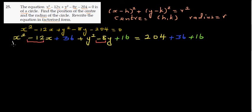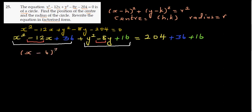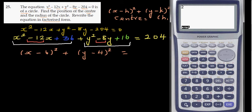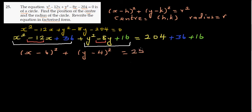Both expressions are now perfect squares. This gives us x minus 6, whole squared, plus y minus 4, whole squared. On the right-hand side, using a calculator: 204 plus 36 plus 16 equals 256. And 256 is 16 squared. So in factorized form: x minus 6, whole squared, plus y minus 4, whole squared, equals 16 squared.